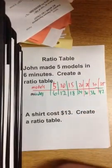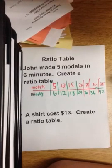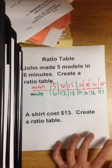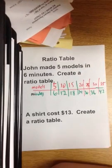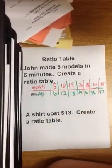For example, if I ask you, in 42 minutes how many models did he make? 35 models. If he made 25 models, how many minutes did it take? Half an hour, or 30 minutes. This is a great way to organize information.